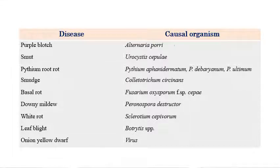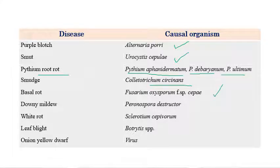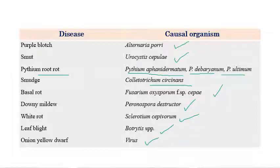The important diseases in onion include: Purple Blotch caused by Alternaria porri; Smut caused by Urocystis cepulae; Pythium Root Rot caused by Pythium aphanidermatum, Pythium debaryanum, and Pythium ultimum; Smudge caused by Colletotrichum; Basal Root Rot caused by Fusarium oxysporum f.sp. cepae; Downy Mildew caused by Peronospora destructor; White Rot caused by Sclerotinia cepivorum; Leaf Blight caused by Botrytis species; and Onion Yellow Dwarf, a viral disease caused by Onion Yellow Dwarf Virus.